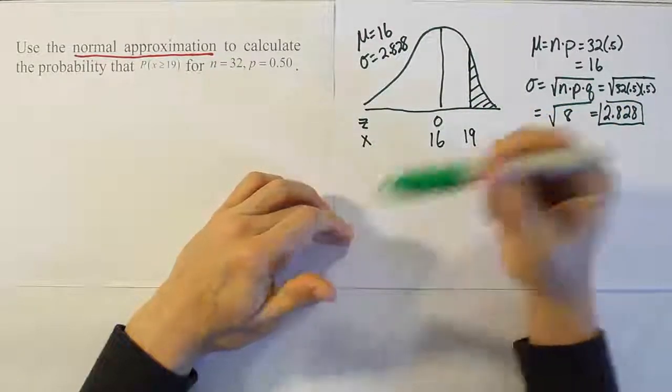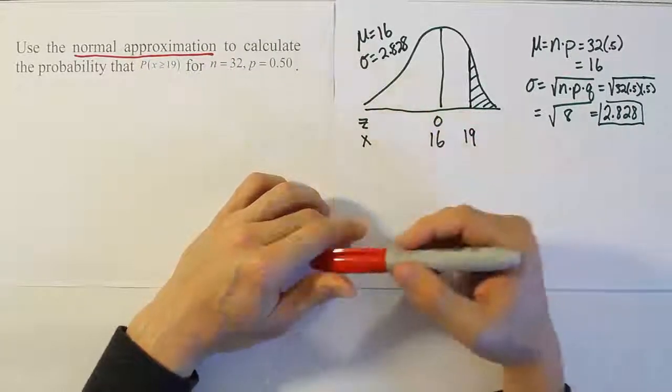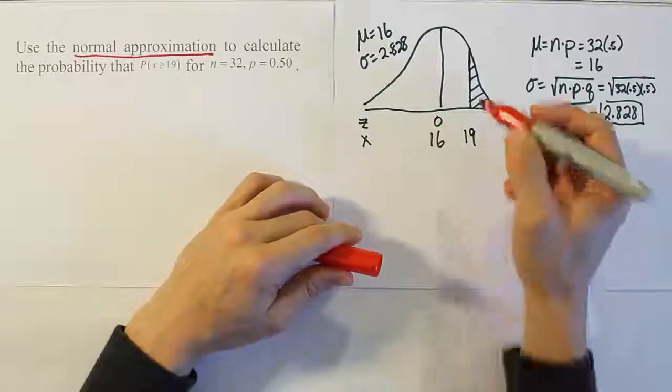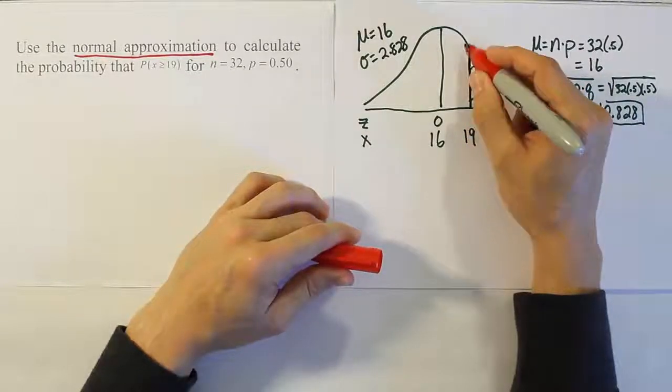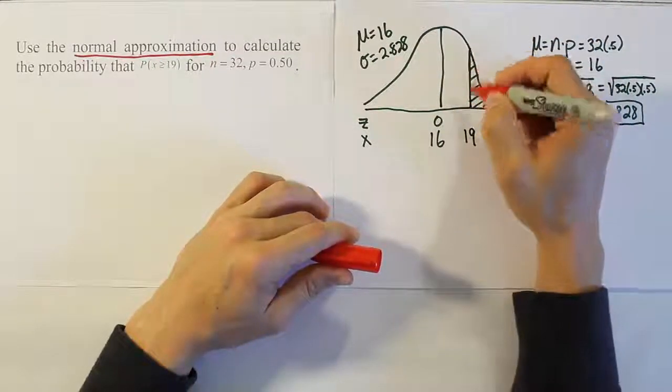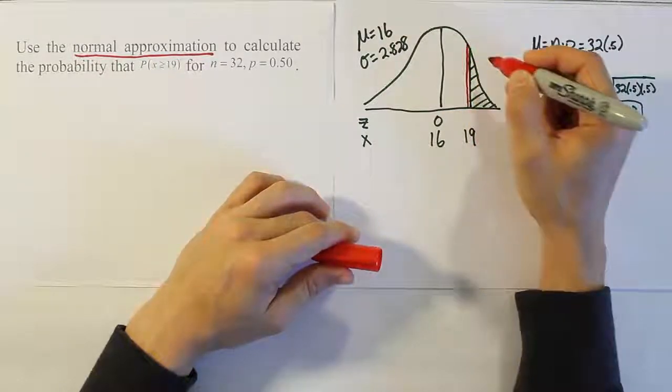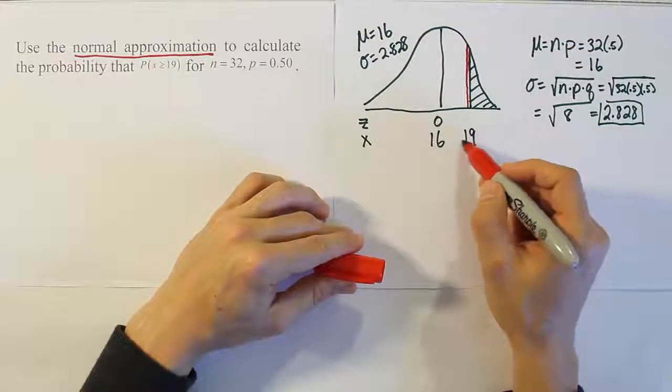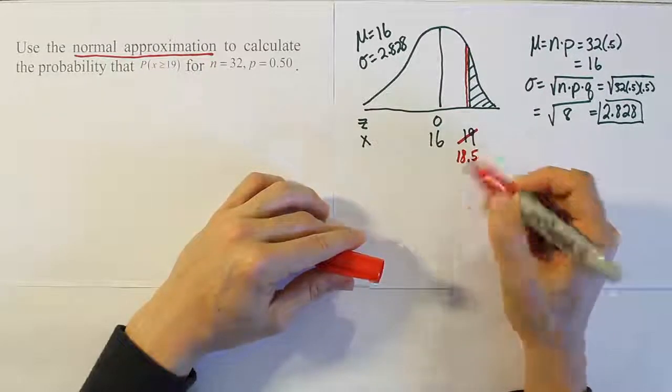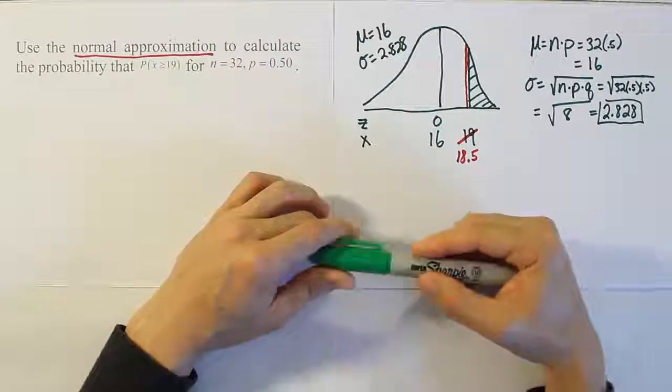This is a binomial approximation problem, so we're going to be approximating the binomial probability by the normal bell curve. When we do that we have to do something called continuity correction. We have to start just a little bit before, so we're going to subtract 0.5 from 19. We're actually going to use 18.5 as the value that we're going to convert into a z-score.